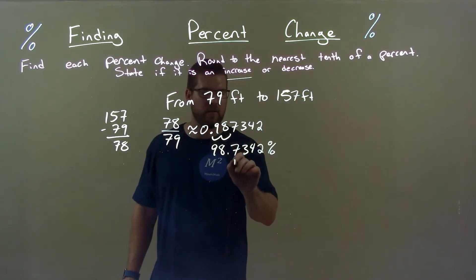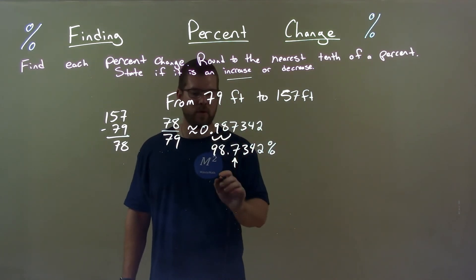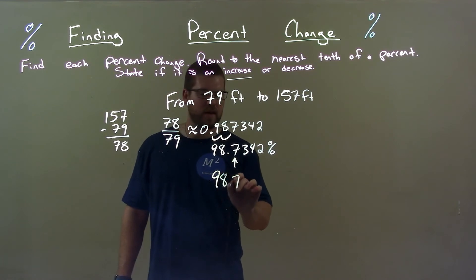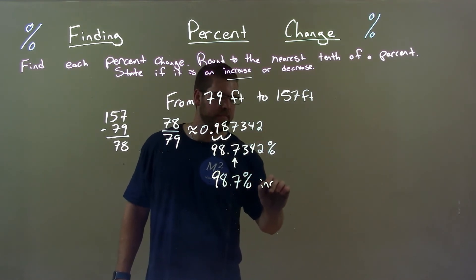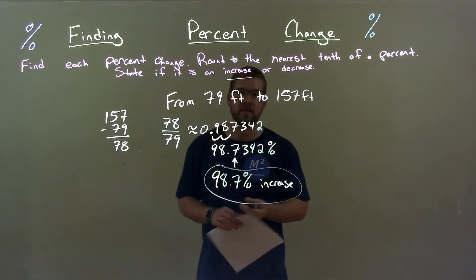Round to the nearest tenth. Look at the seven, tenths place. Look to the three to the right. It's a three. Keeps the seven where it is. 98.7 percent, and we said it was already an increase. And there we have our answer: 98.7 percent increase.